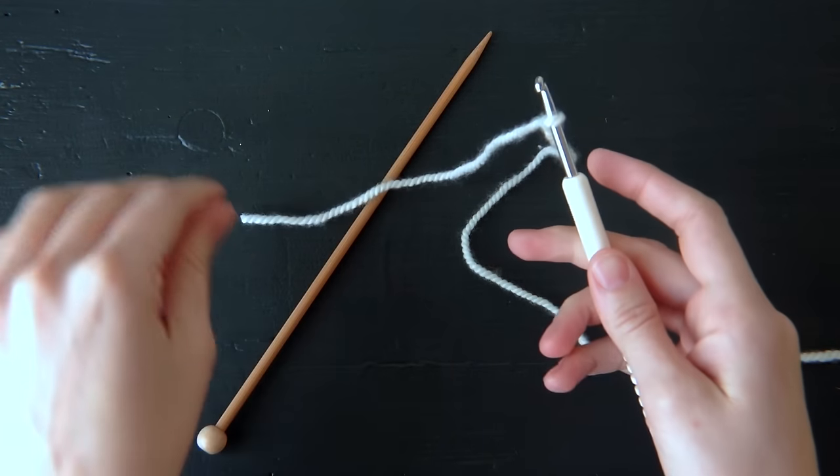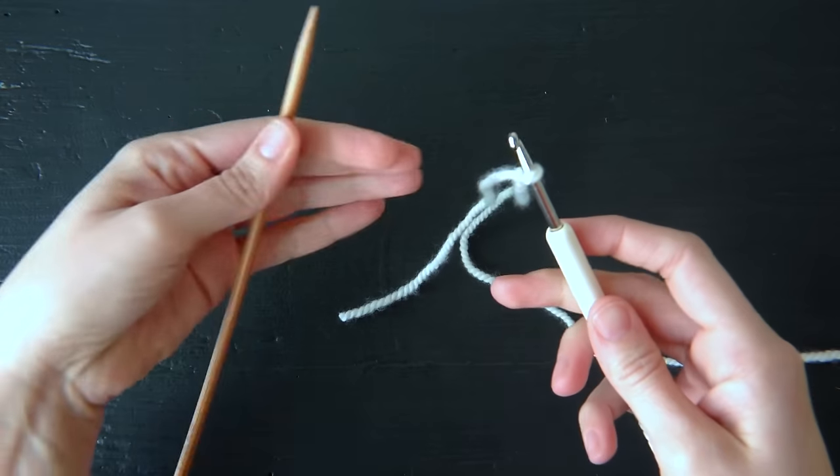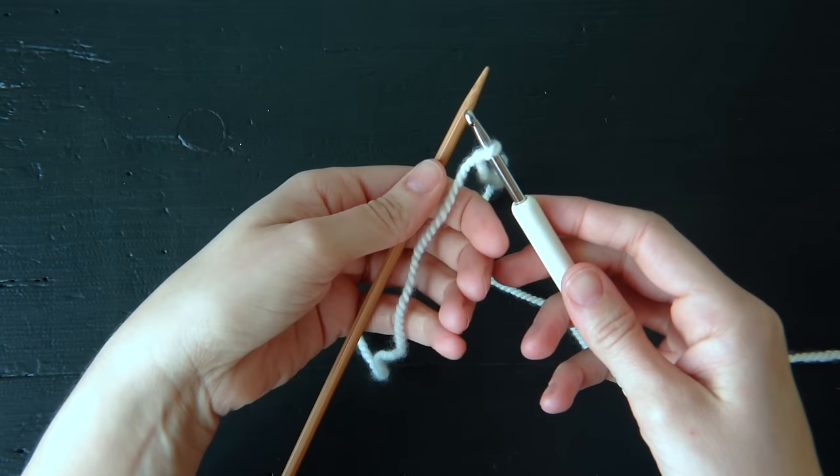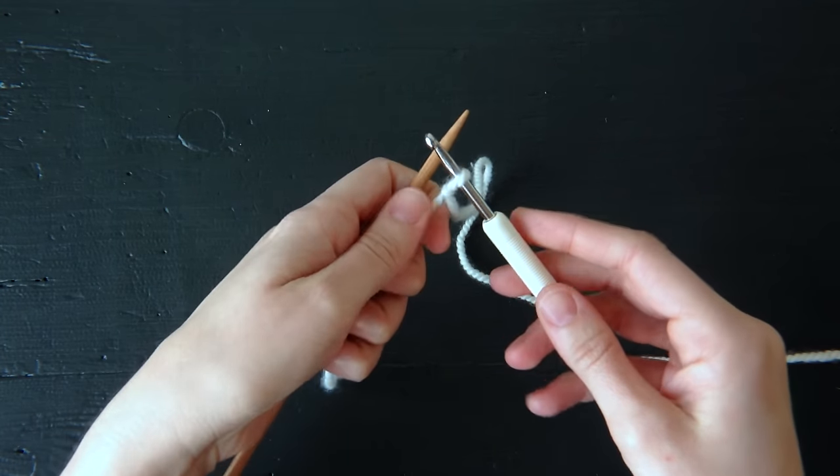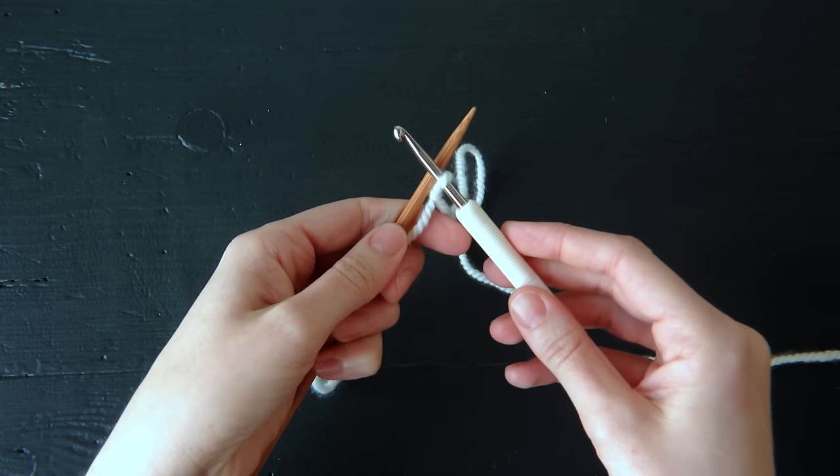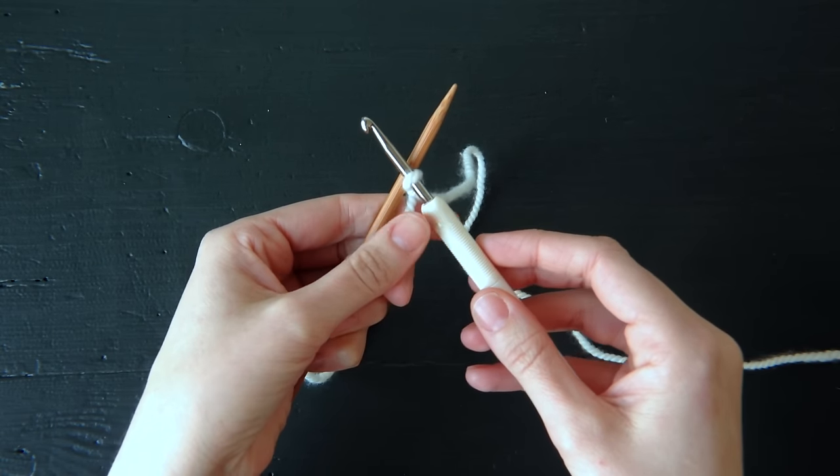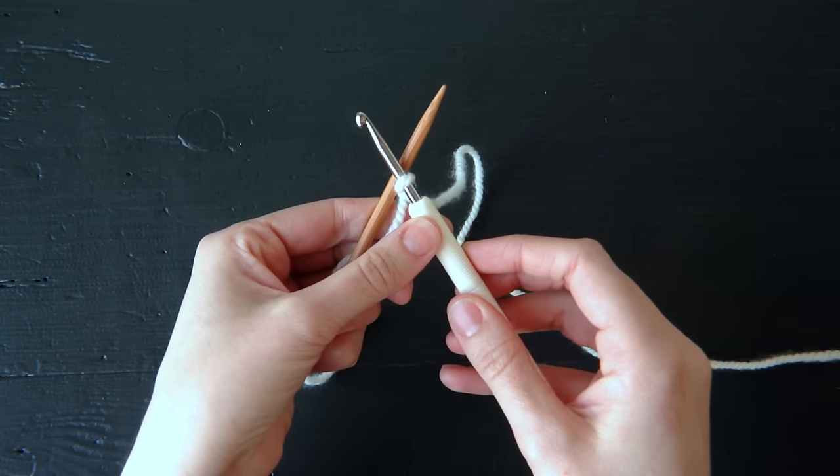With your left hand pick up the knitting needle and with your fingers grab hold of that tail. Cross the crochet hook in front of your knitting needle just like this.